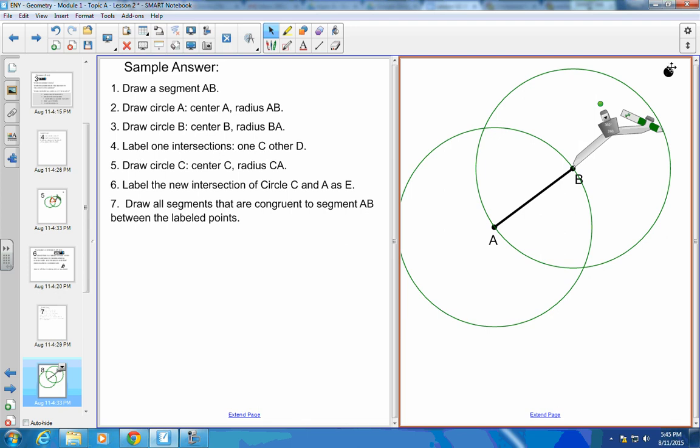Label one intersection as C. So there's one center intersection as C. And the other intersection as D. And then I'm going to draw circle C centered at C. So put my compass centered at C. And it has radius CA. Done.